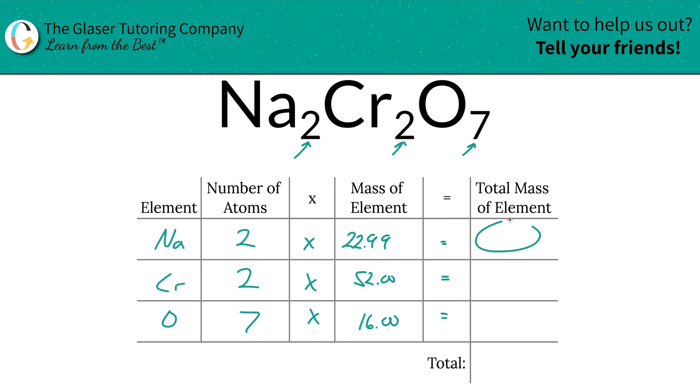Then what we're going to do is find the total mass of the element here by simply multiplying the number of atoms by the mass of the element. So the total mass of sodium here will be 45.98 units of mass. Chromium therefore is 104. We'll make that a little neater, align the decimals.